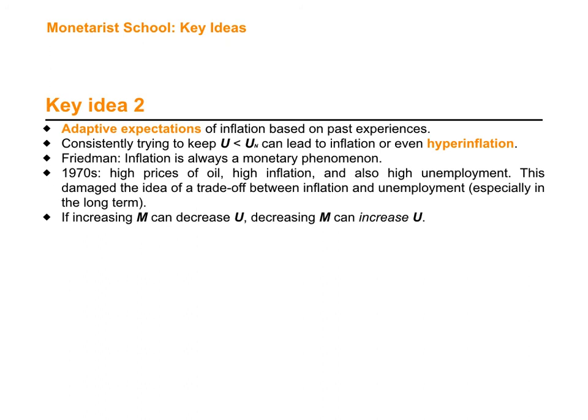Another important idea: if increasing M — the money supply — can decrease unemployment in the short term, that also means that decreasing M can increase unemployment. So if there is a reduction in the money supply, that can lead to an increase in unemployment in the short term. Finally, in order to align changes in M with changes in W — money wages — some countries have adopted indexation. That means indexing money wages to the rate of inflation so that real wages don't go down in periods of high inflation, which reduces the effect of money illusion.